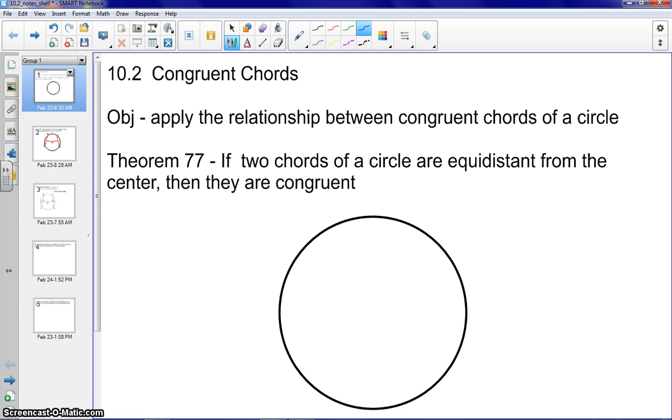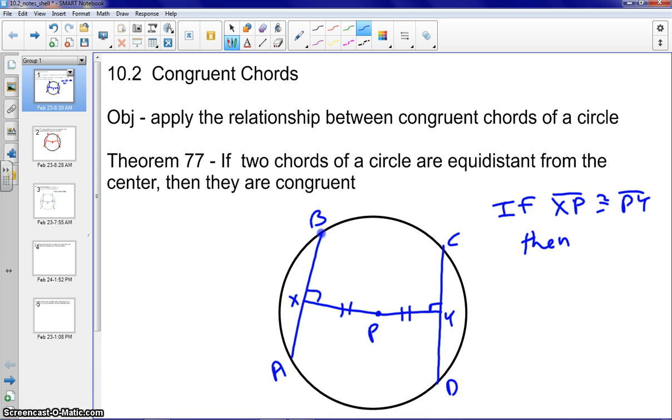So let's go ahead and just draw a description of this. So if we draw two chords here, so I have chord AB, and chord CD, in circle P. If the distance, we'll call that circle P. So if XP is congruent to PY, then we would know that AB is congruent to CD. The two chords are congruent.